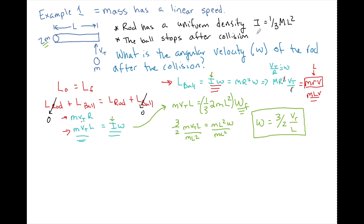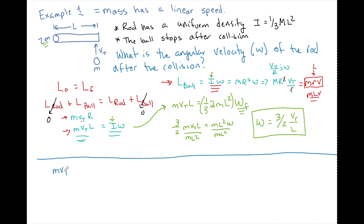Now I told you the ball stopped. What happens if it didn't stop? If it bounced back with a speed of, say, (1/2)vt, the only thing that would change is you'd still have the same initial momentum m·vt·r, and you'd still have the same I·ω of the rod, but now you would just add a term for the ball: m·(1/2vt)·l on the final side. So you just add that extra term — that's the only difference if the ball is not stopped.